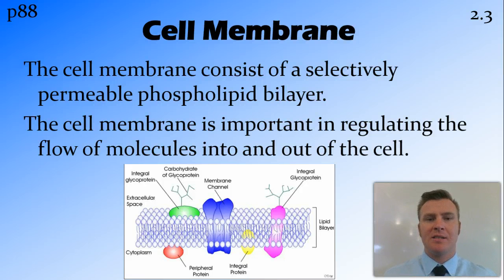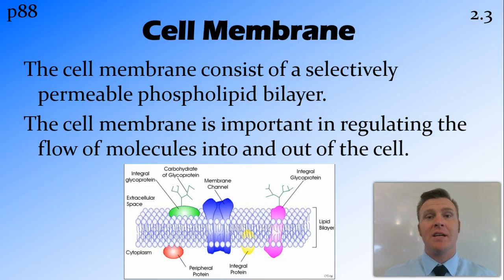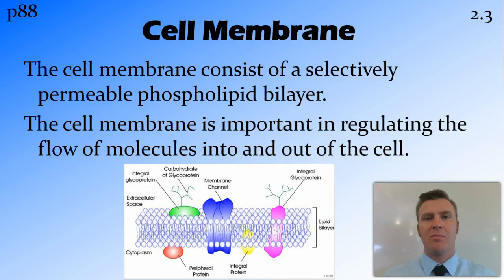The cell membrane consists of a phospholipid bilayer that is selectively permeable, meaning that it can be passed through by some things and not others. This feature is important in regulating which molecules come into cells and which molecules leave cells. The model that we use for the cell membrane is the fluid mosaic model, having the phospholipid bilayer with a whole heap of different proteins spanning across it, aiding in that selective permeability.